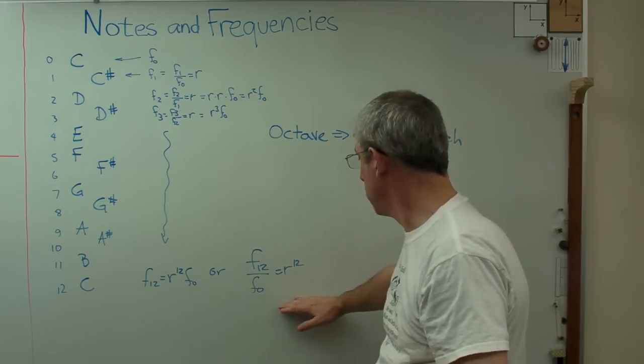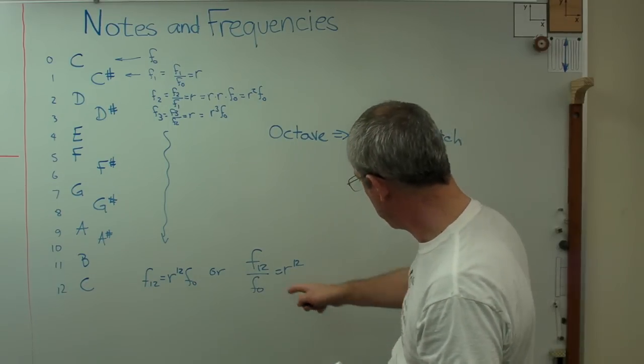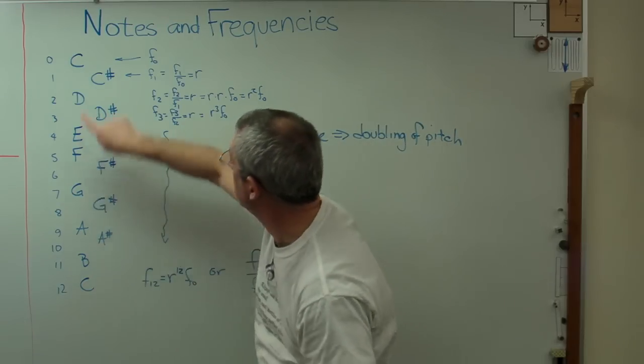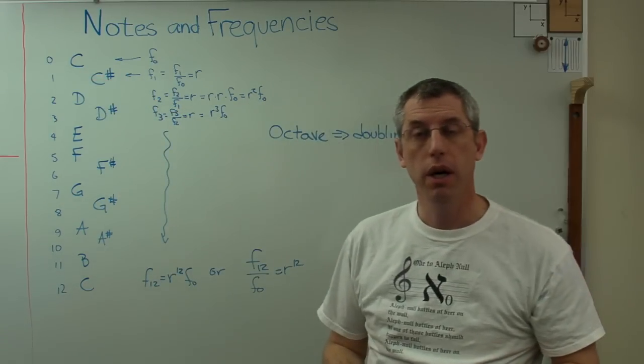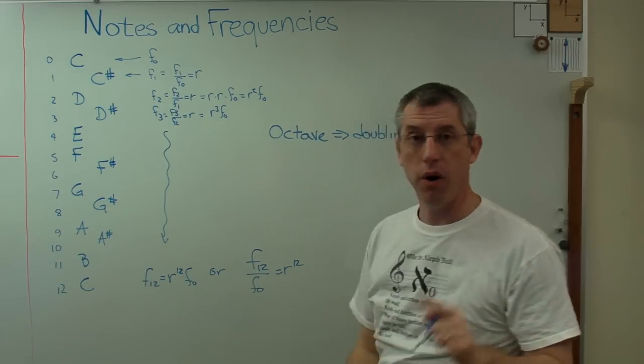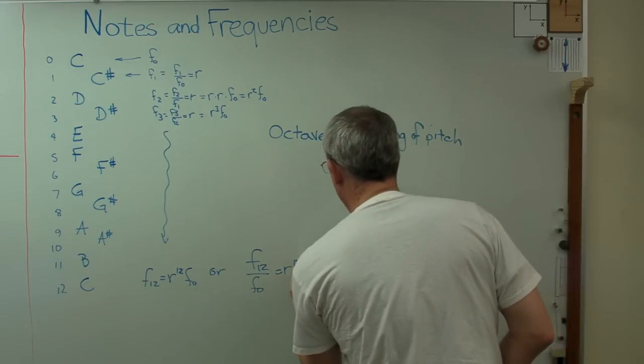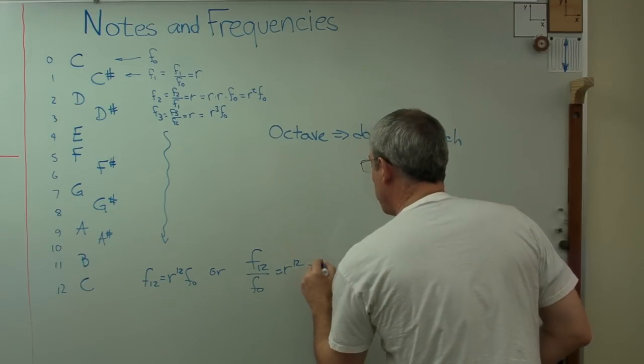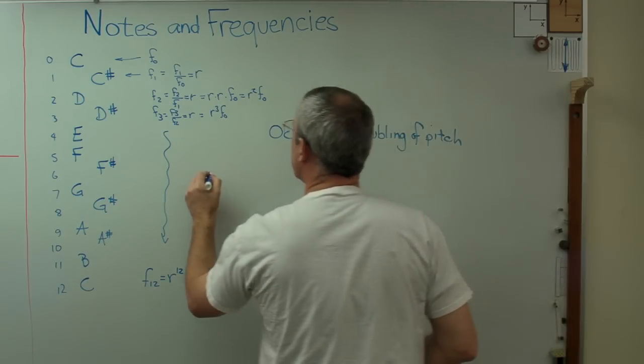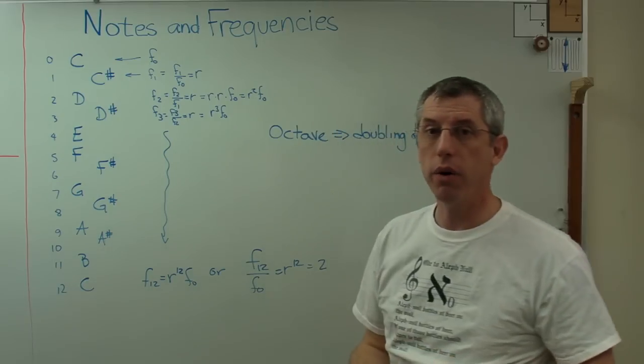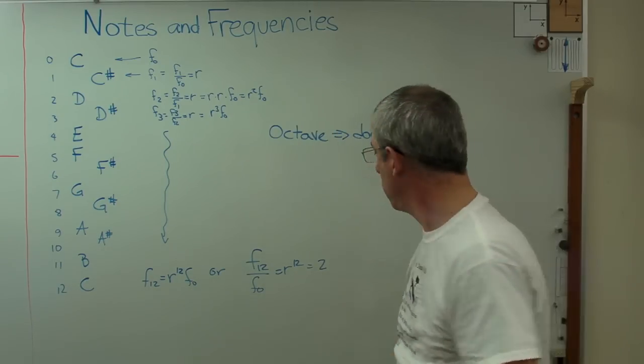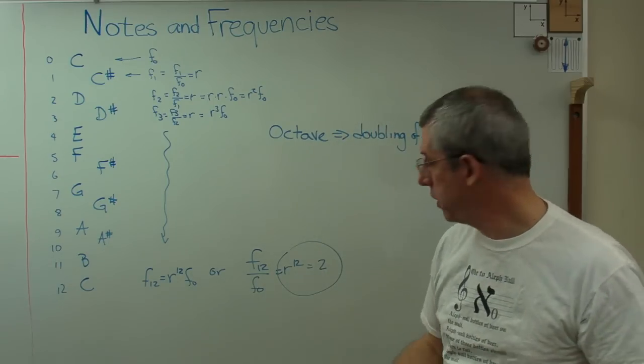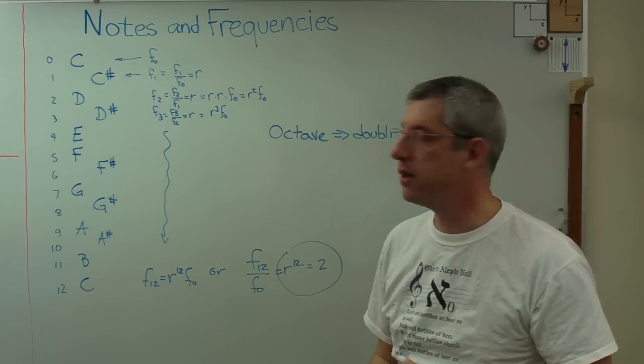So an octave corresponds to a doubling of pitch. I'm really hoping you can see this. Good. I got that in the frame. So we know that F12 over F0, which is this frequency divided by that frequency, is R to the 12th power. But we also know now it's a doubling of frequency. So R to the 12th power equals 2. Well, if R to the 12th power equals 2, now we can figure out what R is. See that little thing right there? That's an equation. One equation, one unknown. Bet I can solve that.